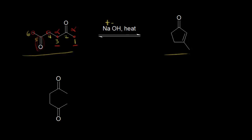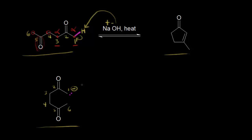Let's first think about deprotonating at alpha carbon one. I put my alpha proton on here, and I think about hydroxide taking this alpha proton, leaving these electrons behind on this carbon. Here I have the dione drawn in a different conformation, numbered carbon one, two, three, four, five, and six. If we're deprotonating at carbon one, these electrons would end up on carbon one to form a carbanion — shown in magenta — with a negative one formal charge on this carbon. I'm going to show the carbanion functioning as a nucleophile, attacking this carbonyl over here.